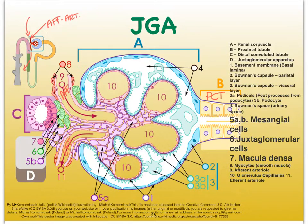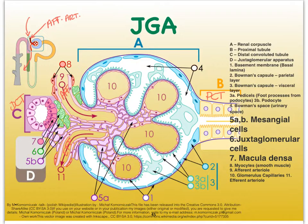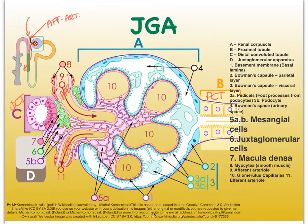One last structure to point out is our distal convoluted tubule. This structure comes into very close contact with our arterioles, particularly our afferent arteriole. Where this happens, we see some changes, and we're now going to focus on the three cell types of the juxtaglomerular apparatus in this area. The mesangial cells can act phagocytically, especially in the glomerular area, and here they probably influence some contractile properties of those arterioles.